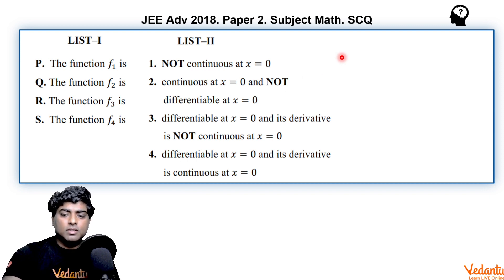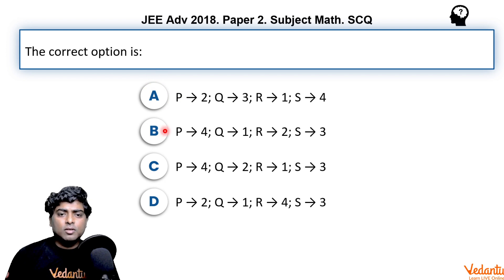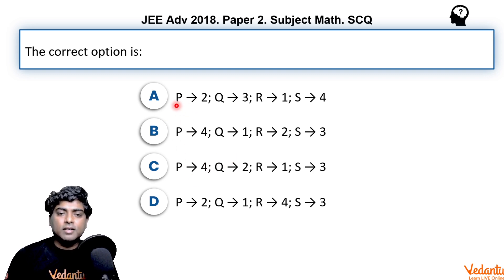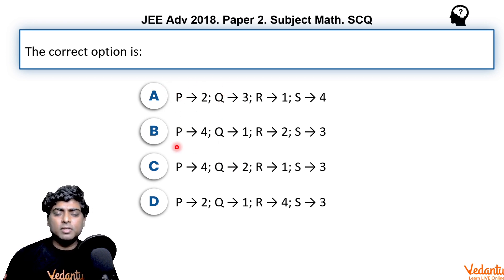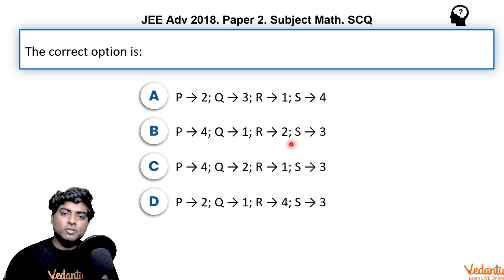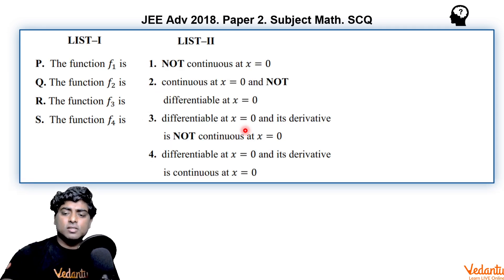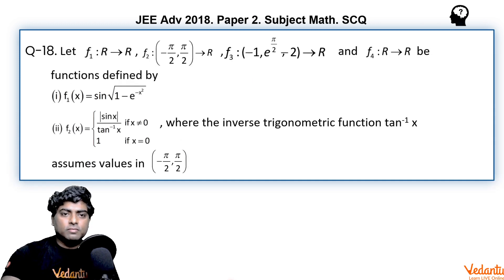Looking at the options, if we check the matching for p only, two options will be rejected. If p goes to 2, then options A and D remain to check based on q. Similarly, if p goes to 4, different options apply. So if we find the correct matching for p and q, we can identify the correct option without needing to check r and s. However, in this video we will discuss all four functions in detail.